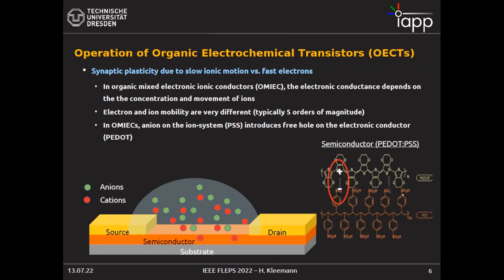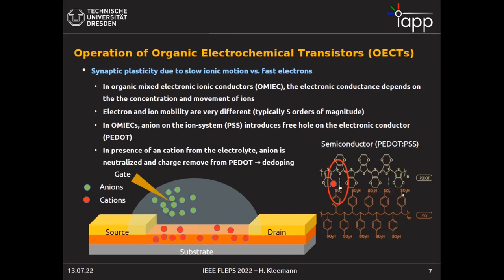The material system we use as a benchmark is PEDOT:PSS. You have the ionic part, which is the PSS unit with a negative charge, and that negative charge introduces a positive charge — the polaron — which can move along the backbone and create electrical conductivity. If you put a gate electrode into the system and apply a potential, you remove cations from the polymer. In PEDOT:PSS, for example, a sodium cation neutralizes the PSS⁻, taking the polaron away from the semiconductor so PEDOT becomes non-conductive.